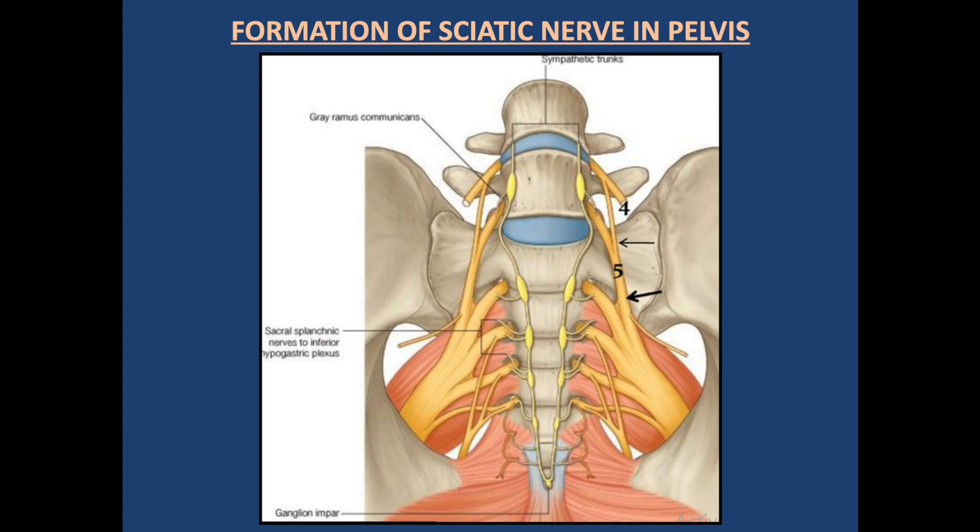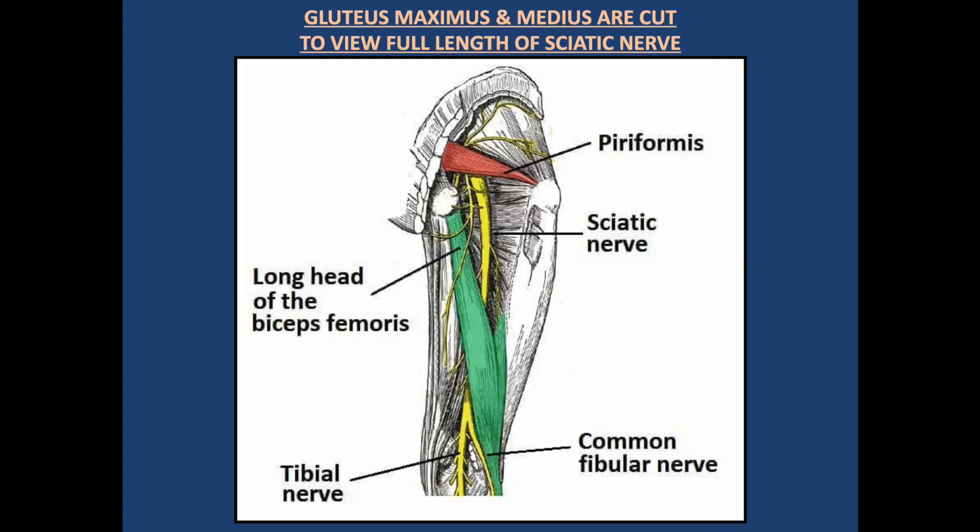This diagram shows the formation of the sciatic nerve in the pelvis. We can see five nerve roots emerging from the neural foramina in front of the piriformis muscle and entering the posterior thigh. This diagram shows the sciatic nerve in full view — it emerges under the cover of the piriformis muscle and moves in the posterior thigh. In the gluteal region it is covered by the gluteus maximus, and in its full length it is only crossed by the long head of the biceps femoris muscle.